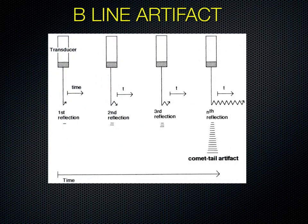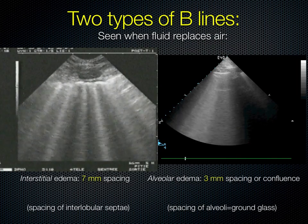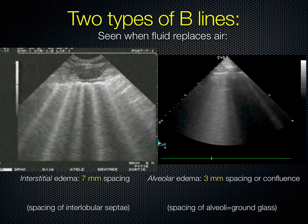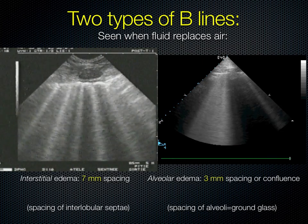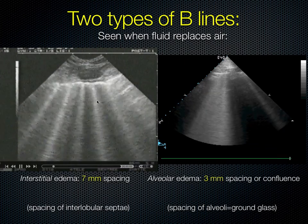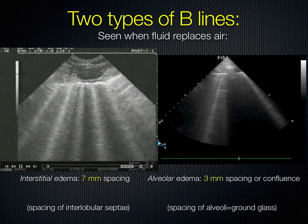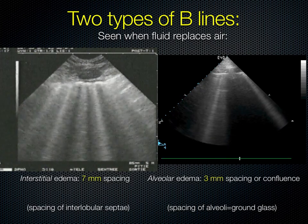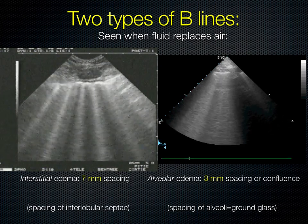Here's a representation of that concept. With the ultrasound beam coming down, there's a reflection within the interface — that vertical interface where the interlobular septae come all the way up to the chest wall. Depending on the number of reverberations, which can be infinite, they can extend all the way to the edge of the screen. A spacing of 7 millimeters typically represents interstitial edema with thickened interlobular septae, while more confluent edema is really the ultrasound equivalent of ground glass opacity on CT scan.